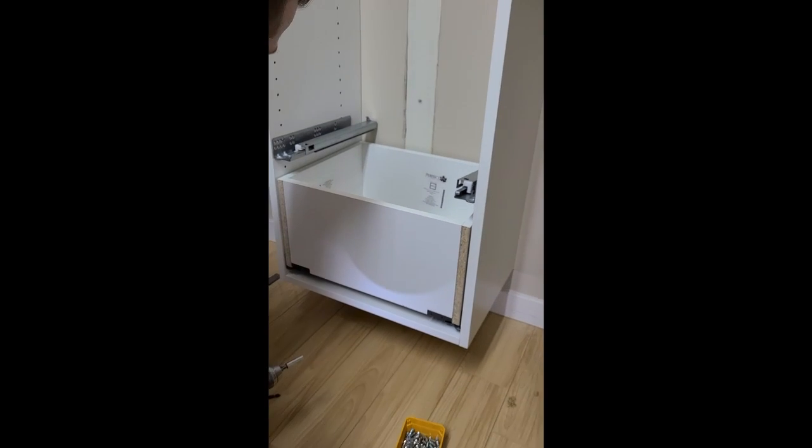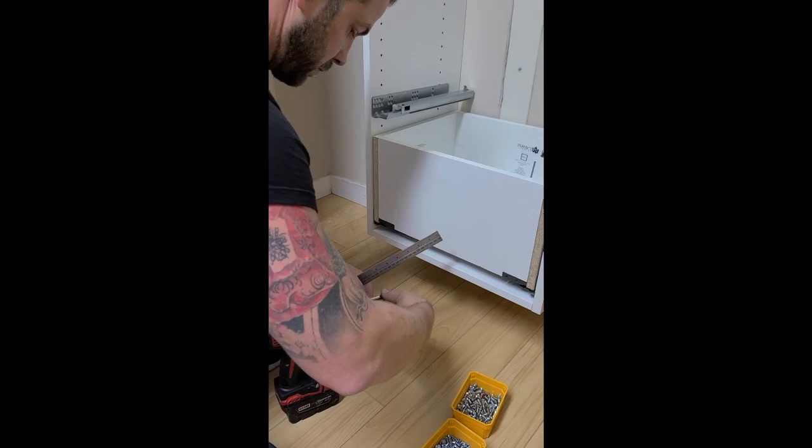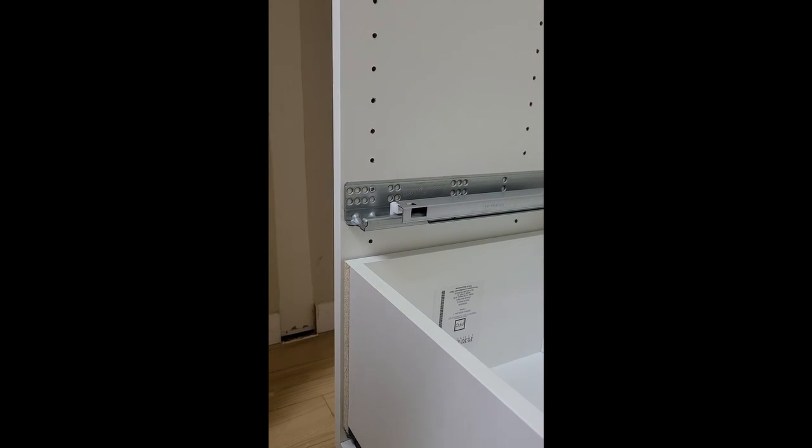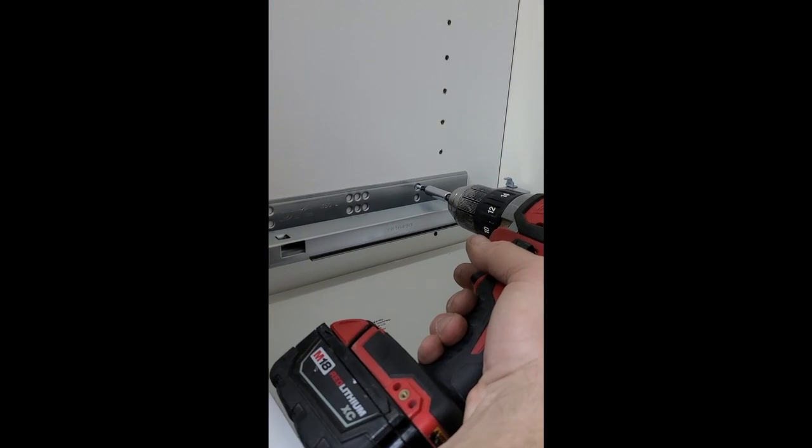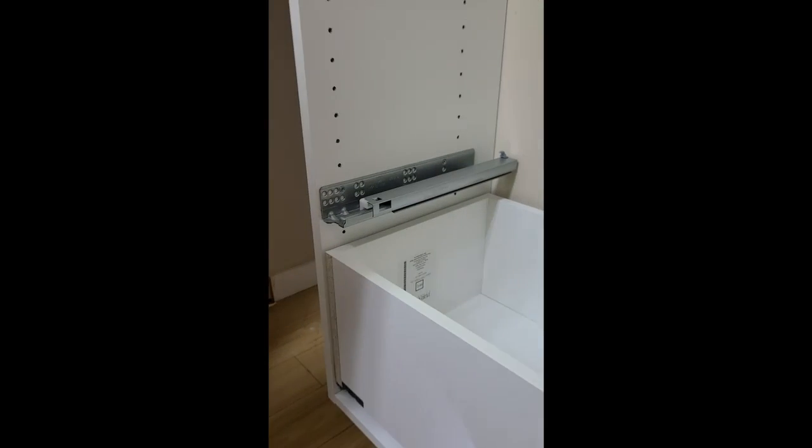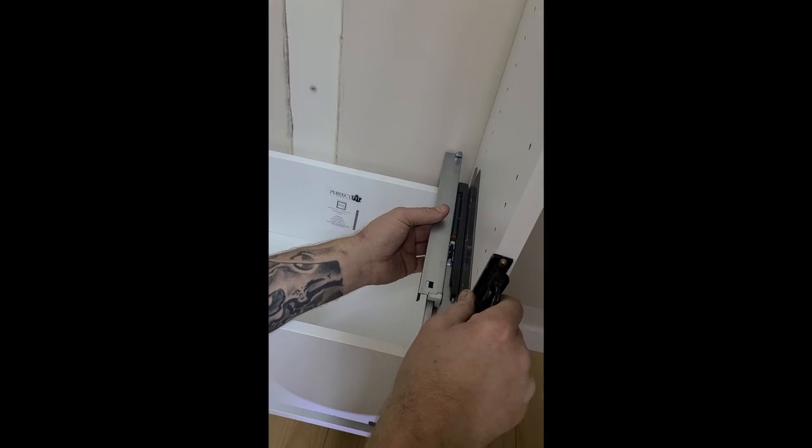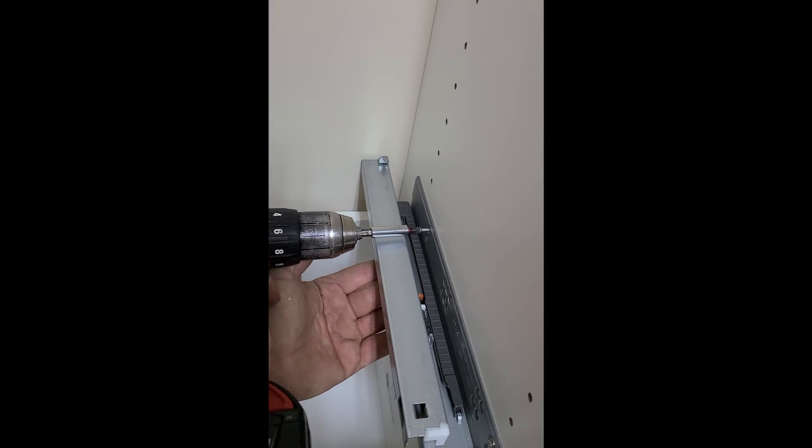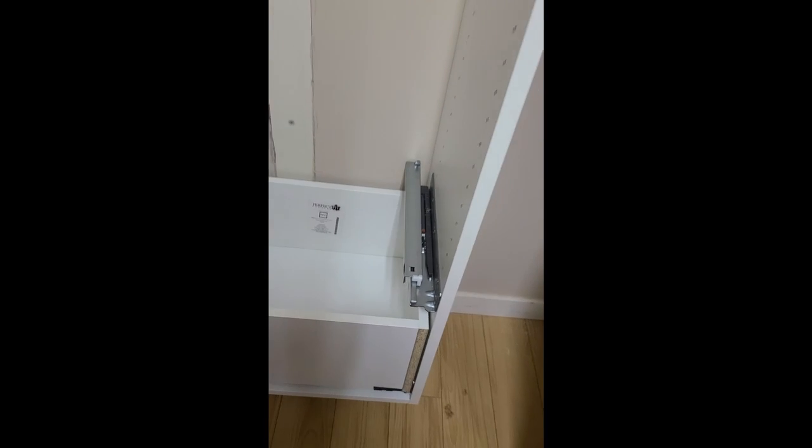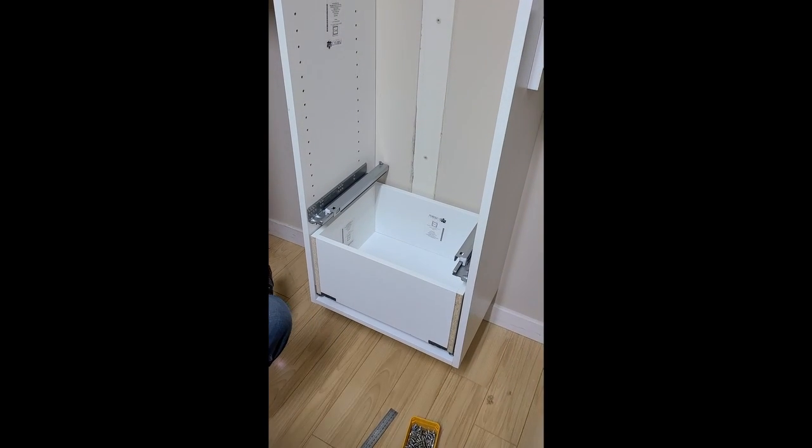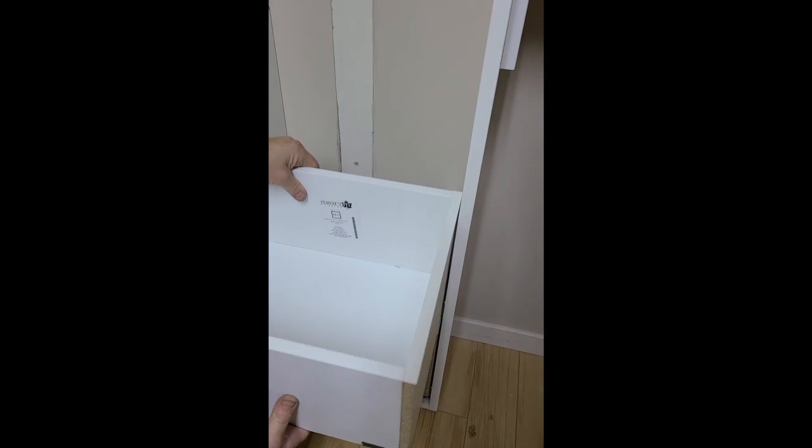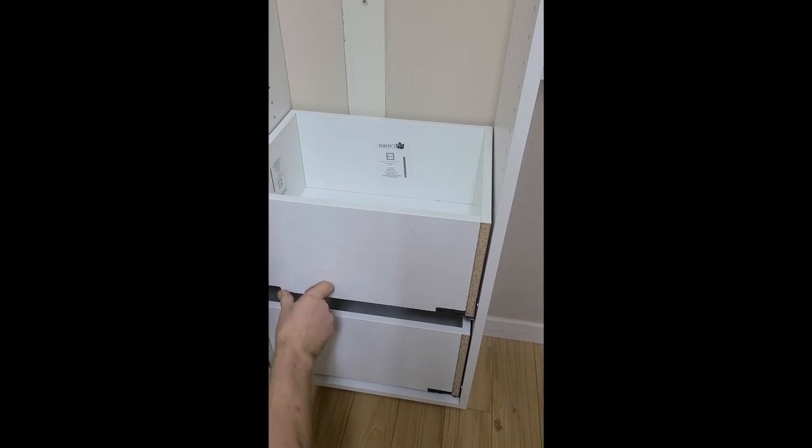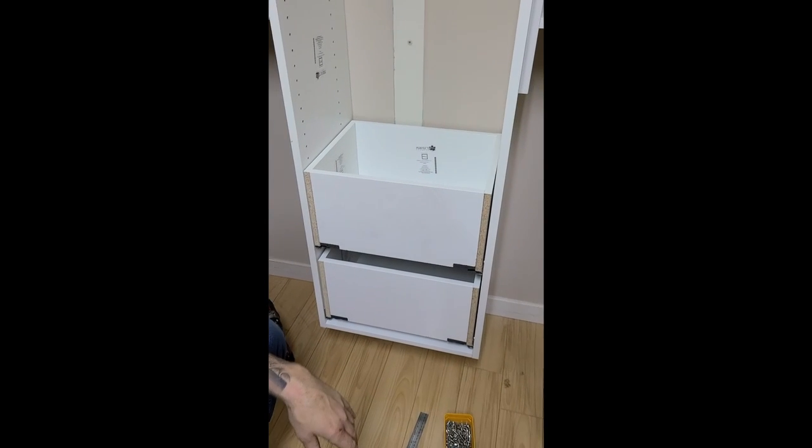Grab that Euro screw. Pop that in. Again, we want to bring it down just a tad. Same thing on the right. Then we put our drawer box in. You can hear it all click into place. And there we go.